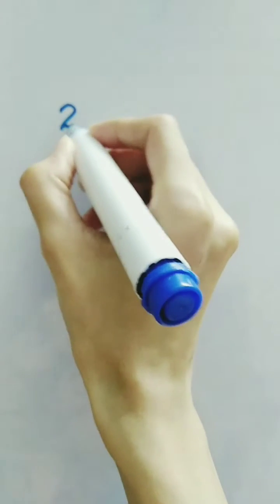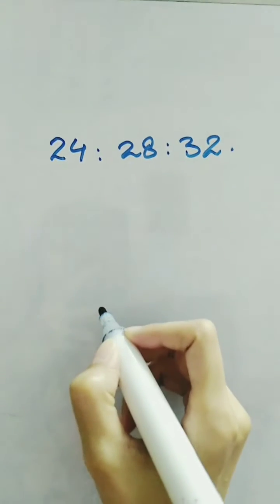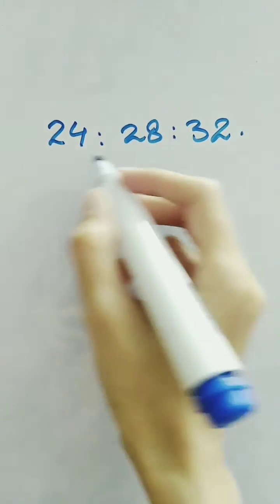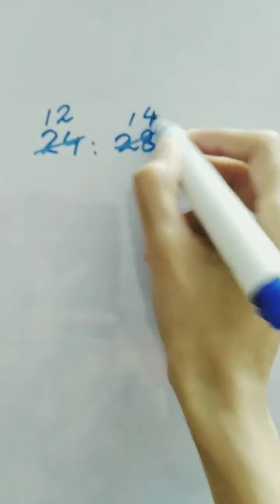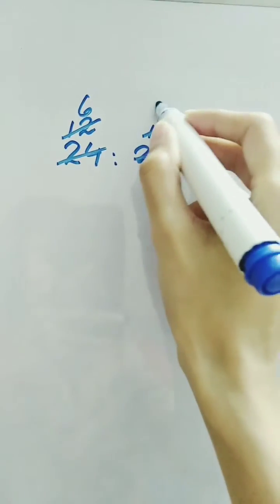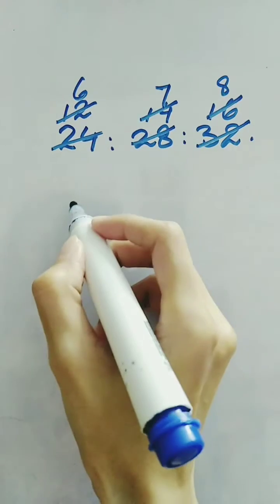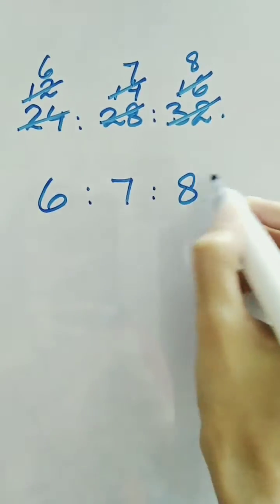We write 24 : 28 : 32. These three values are divisible by 2, so we reduce them. On further reducing, we have a ratio of 6 : 7 : 8.